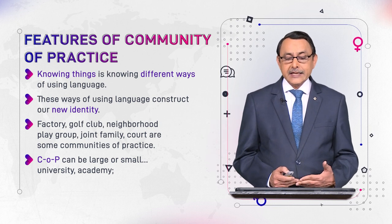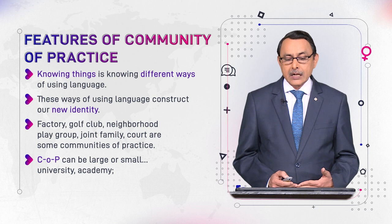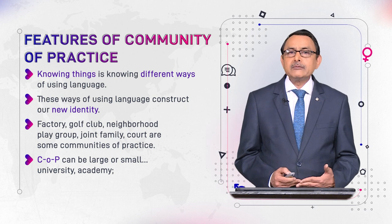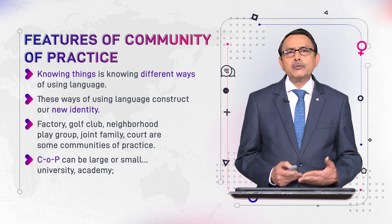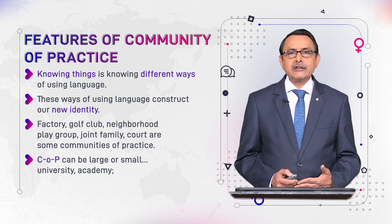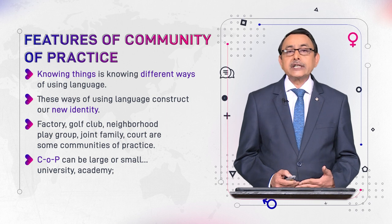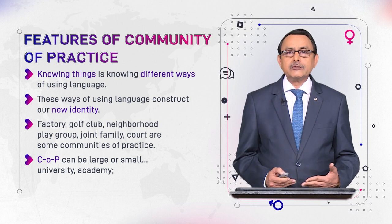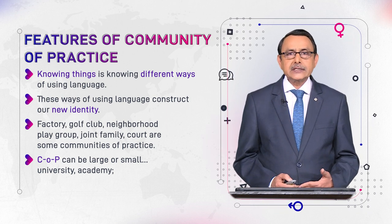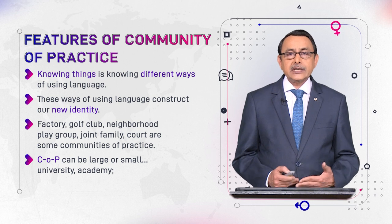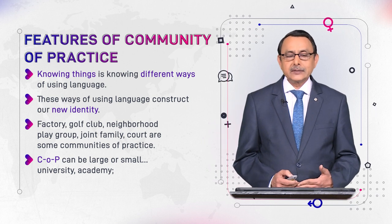COPs can be larger or small — a few members or a large number of members can form a social group. For example, a university is a large community of practice, but an academy is a small group.